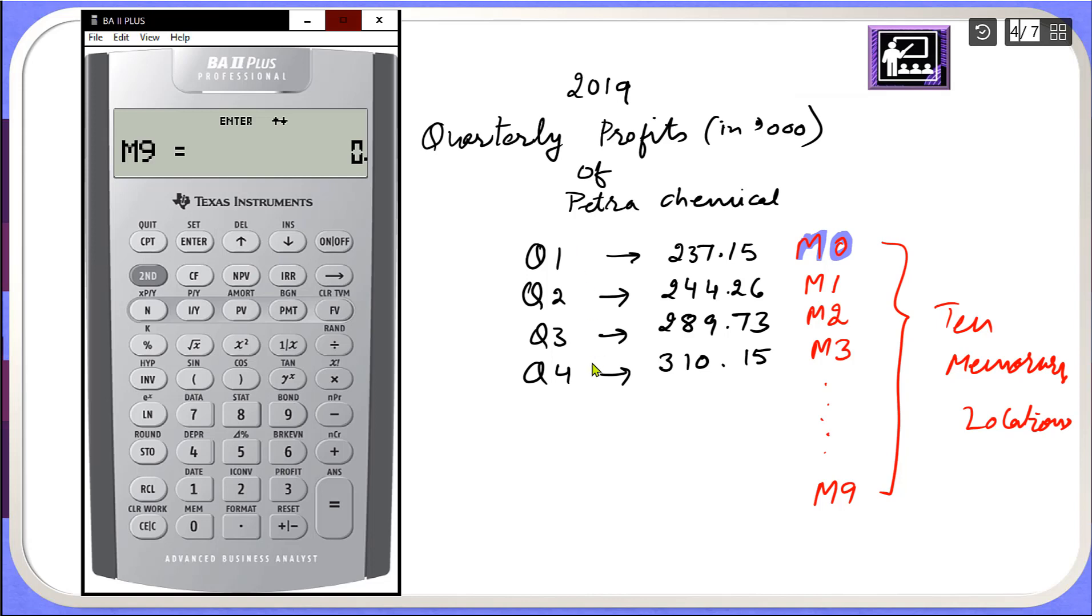Now in order to recall these, I came out of this. Suppose we have to recall these numbers and add these numbers to get an annual profit. So how we will do that?